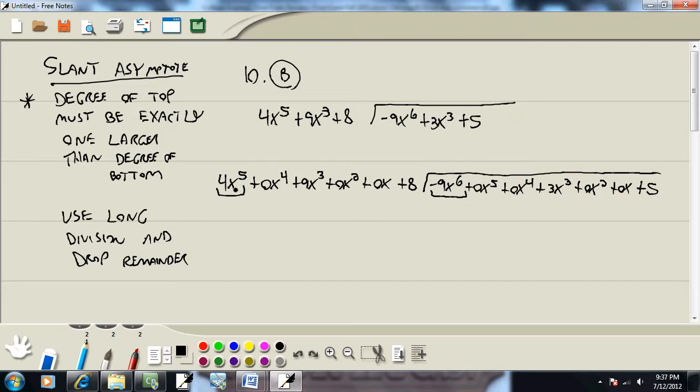Now this isn't going to be very easy. We have to figure out what times 4x to the fifth gives us negative 9x to the sixth. This would be negative 9 fourths x. How do I know that? If I were to multiply this times this, the 4s would cancel and leave me the negative 9 on top. So if you've got something bizarre like this, whatever number is here, the 4, goes in your denominator. And then whatever number is here goes up on top.